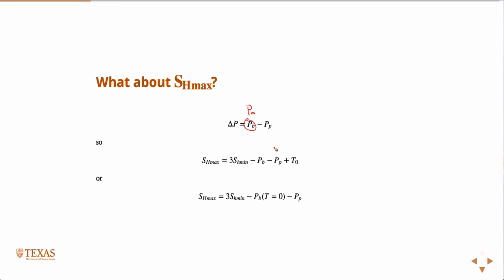And so if you were to measure SH min in an extended leak-off test, if you could identify the breakdown pressure, the instant at which a tensile fracture was to initiate, measure the pore pressure and you know the strength of the rock, then you might assume that you could infer SH max that way, right? Because everything on the right-hand side would be known.